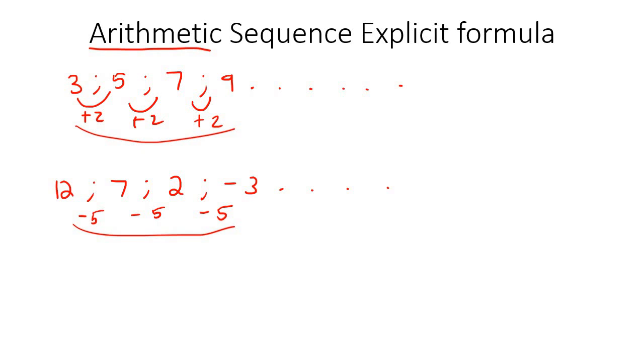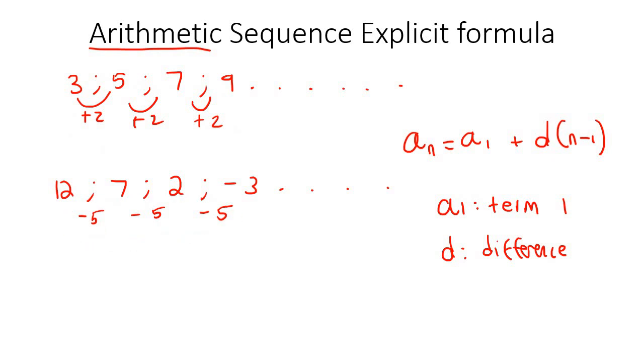So whenever you are given an arithmetic sequence, then the formula that you are going to use goes like this. So let me explain what each thing represents. a1 represents term 1. d is the difference. So for example, here the difference would be 2. Here the difference would be negative 5. n is the term, or let's rather say the position number, and then an is the value.